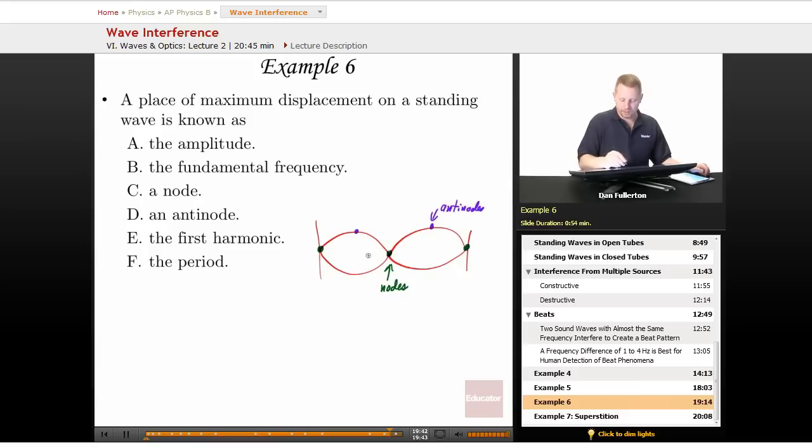In this case, we have three nodes, two antinodes. And again, in a standing wave, it's not in both places at once. It's going to be oscillating back and forth. So at any given point in time, you might have it look like this. And then a second later in time, it's going to look like this.